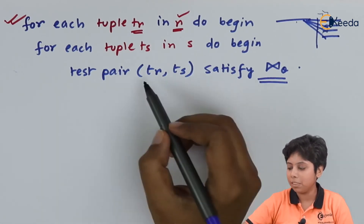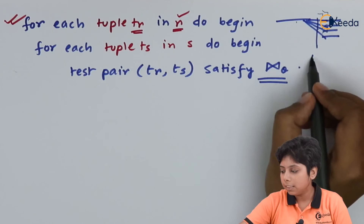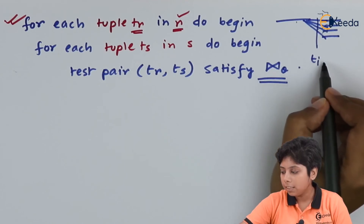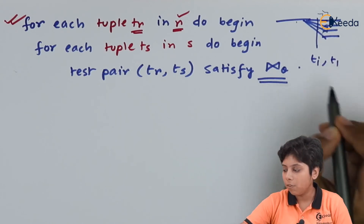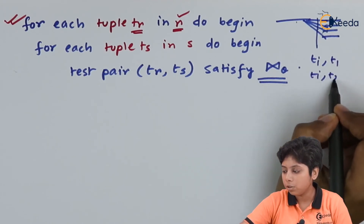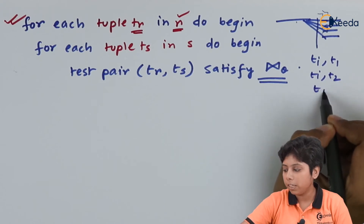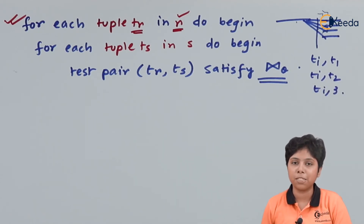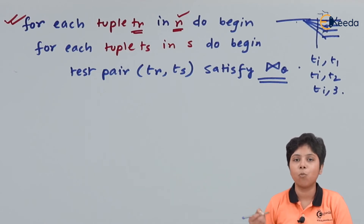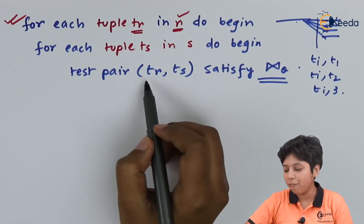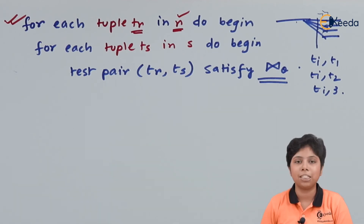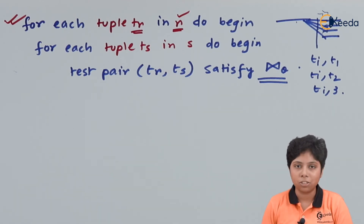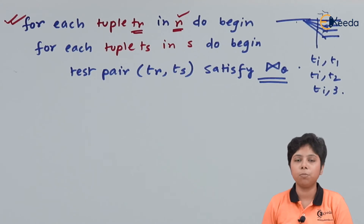So we create all combinations: ti t1, ti t2, ti t3, and so on. Then we move to ti+1 t1, ti+1 t2, and so on, taking every pair to check whether it satisfies the theta join condition or not.